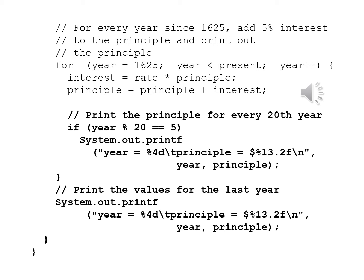After the close brace, you'll see a comment: print the values for the last year. If the last year is, for example, 2022, it would not have been printed. Otherwise, we want to see the most recent year. So we write System.out.printf with year equals %d, tab, principal equals $%13.2f, newline, and then year and principal. As always, we end with a close brace for the main method and then a close brace for the class.